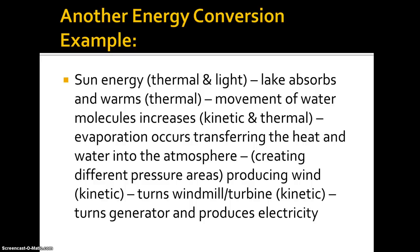Here's another energy conversion example. Sunlight — which is thermal, light, and electromagnetic radiation — is absorbed by a lake, which warms and converts it to thermal energy. The movement of water molecules increases; this is kinetic energy. Evaporation transfers the heat from the water to heat in the atmosphere, which can generate storms. On a smaller scale, it produces different pressure areas and wind, which is kinetic energy. That kinetic energy can turn a windmill or turbine, which turns a generator and produces electricity. So there are many energy conversions along the way.